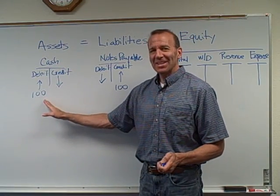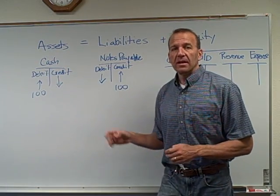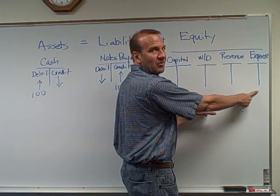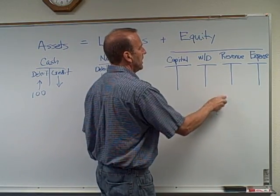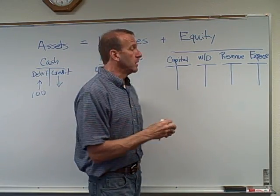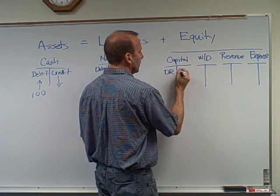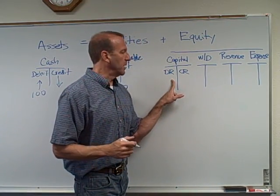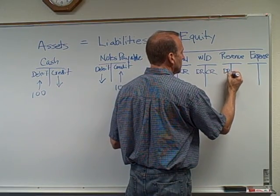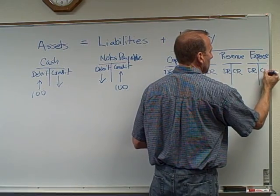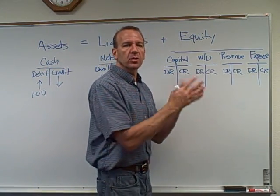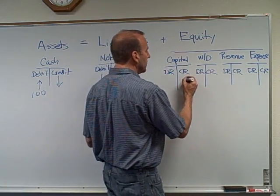Remember: assets increase with debits, liabilities increase with credits. Now let's look at equity accounts. The abbreviation for debit is DR and for credit is CR. Debits are always on the left, credits always on the right. Capital and revenue are typical equity accounts — they increase equity, so they increase with a credit and decrease with a debit.